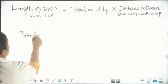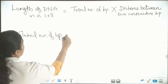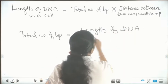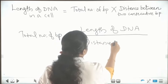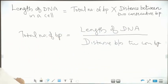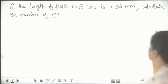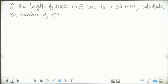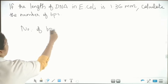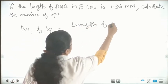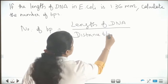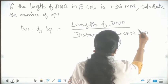The total number of base pairs can be calculated by the formula: length of DNA divided by distance between two consecutive base pairs. So now we can calculate — if the length of DNA equals 1.36 millimeter, calculate the number of base pairs. We can use the formula: number of base pairs equals length of DNA divided by distance between two consecutive base pairs.